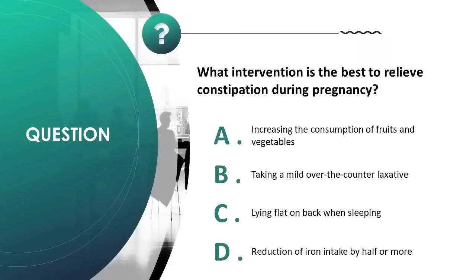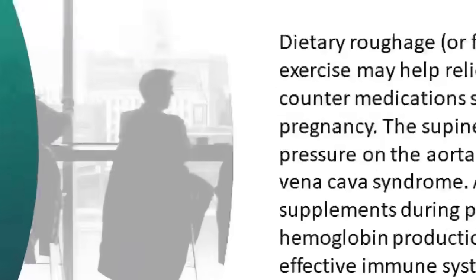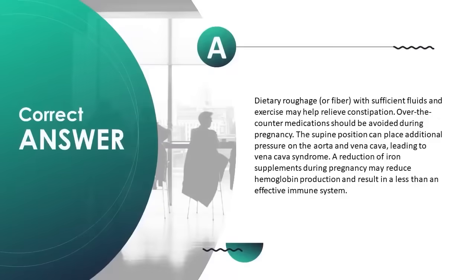What intervention is best to relieve constipation during pregnancy? A) increasing consumption of fruits and vegetables, B) taking a mild over-the-counter laxative, C) lying flat on back when sleeping, D) reduction of iron intake by half or more. Correct answer is A. Dietary roughage, or fiber, with sufficient fluids and exercise may help relieve constipation.